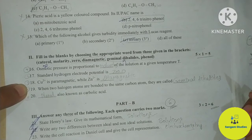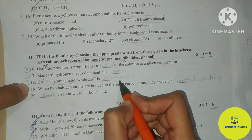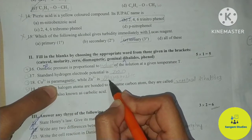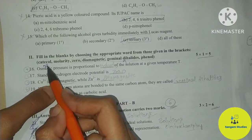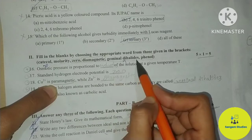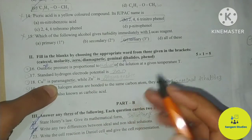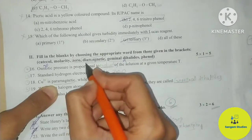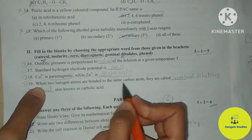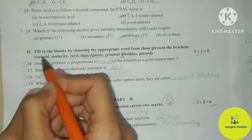Question 18: Cu²⁺ is paramagnetic while Zn²⁺ is dash — the answer is diamagnetic, so you can fill that in. Next question: when two halogen atoms are bonded to the same carbon atom, they are called dash — they are called geminal dihalides, not catechol. If you know the concept of geminal dihalides, you can fill that in.